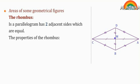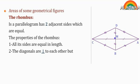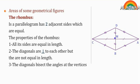The properties of the rhombus. As shown in the figure: 1. All its sides are equal in length. 2. The diagonals are perpendicular to each other, but they are not equal in length. 3. The diagonals bisect the angles at the vertices.